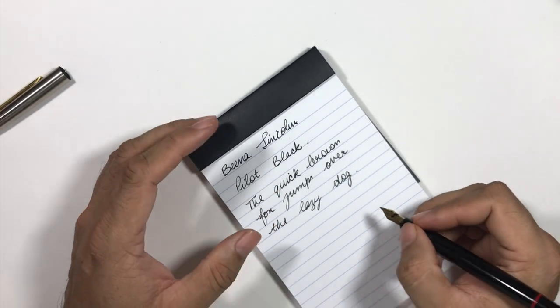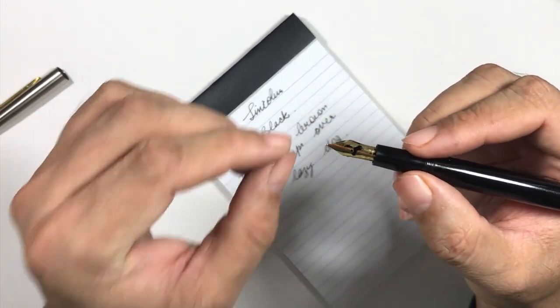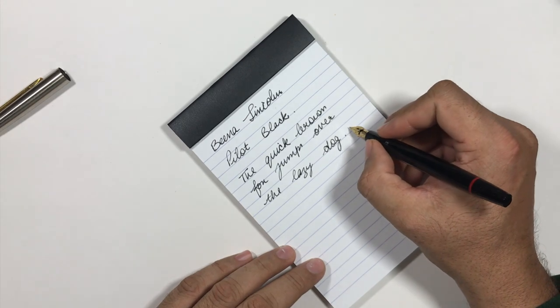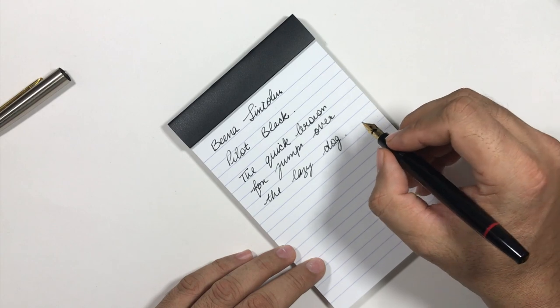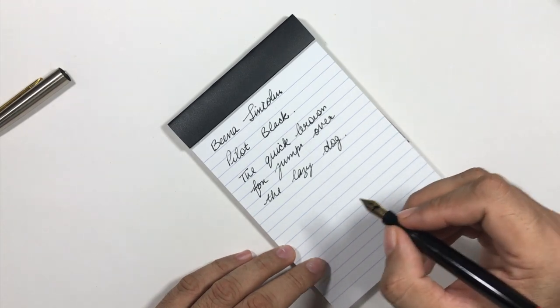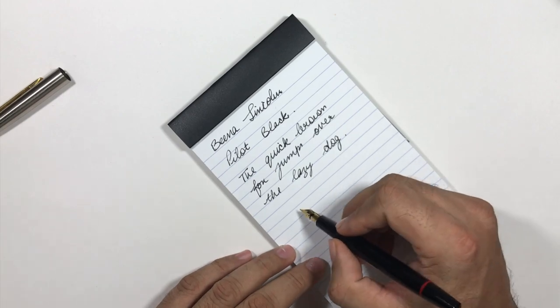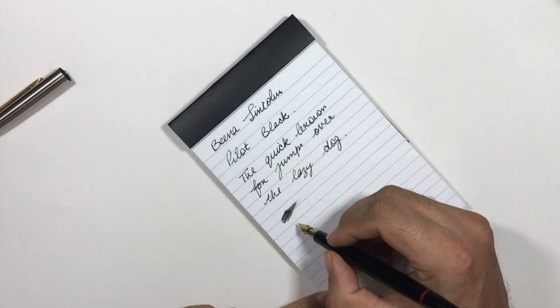This pen writes well, it's smooth, but this nib has a sweet spot actually. If I write at a particular angle, this nib is very smooth, but when that angle changes, it becomes a little bit feedbacky. Otherwise there's no problem with this nib.